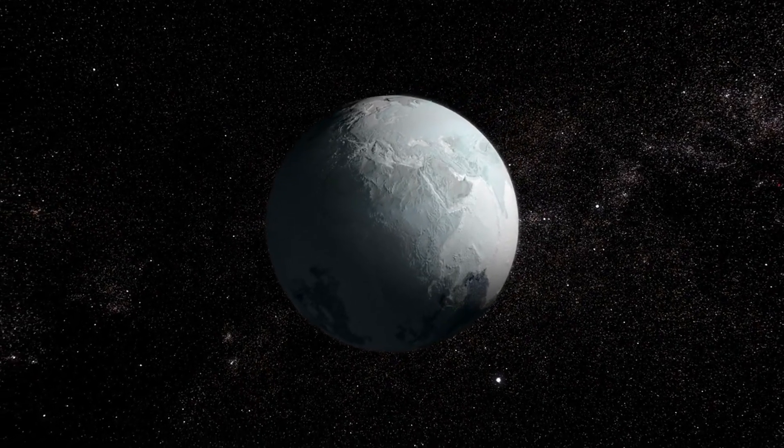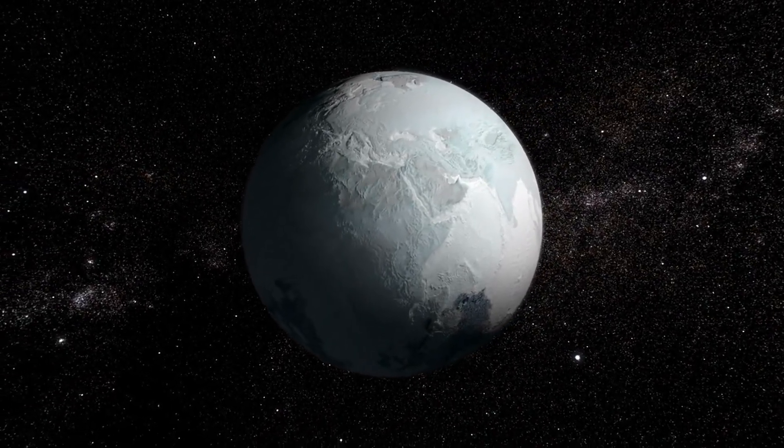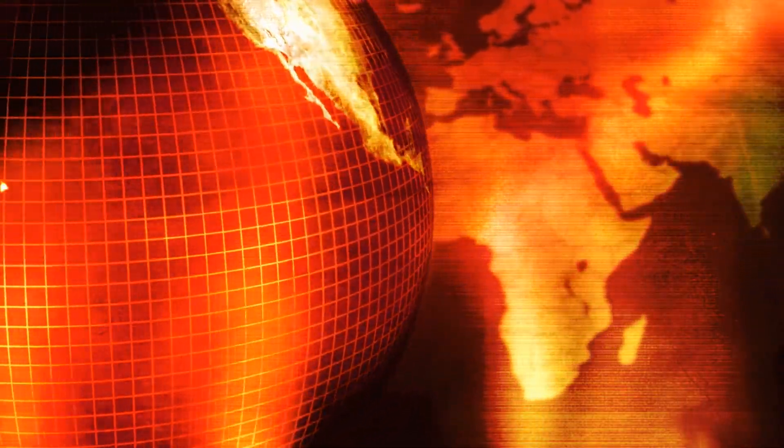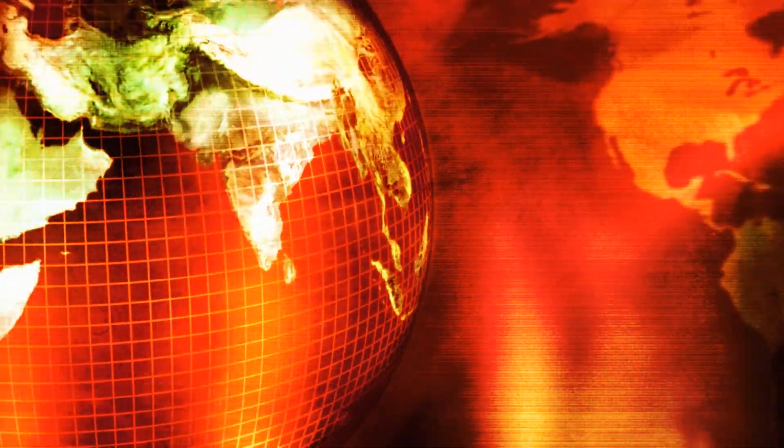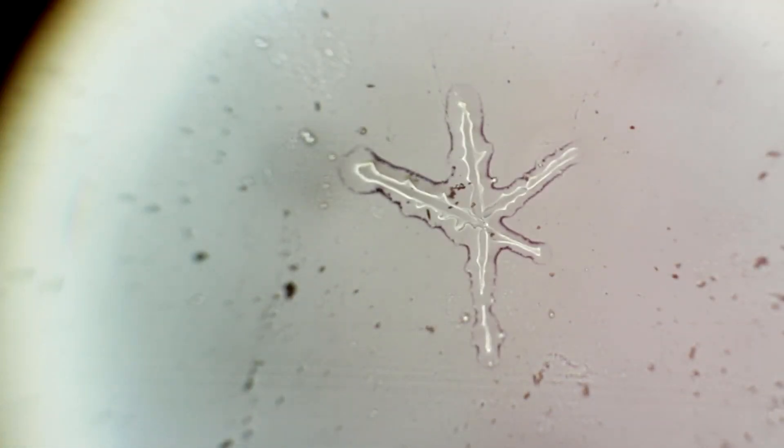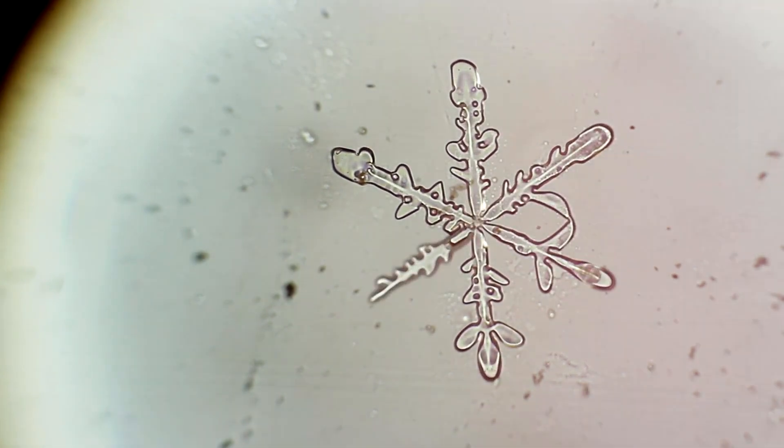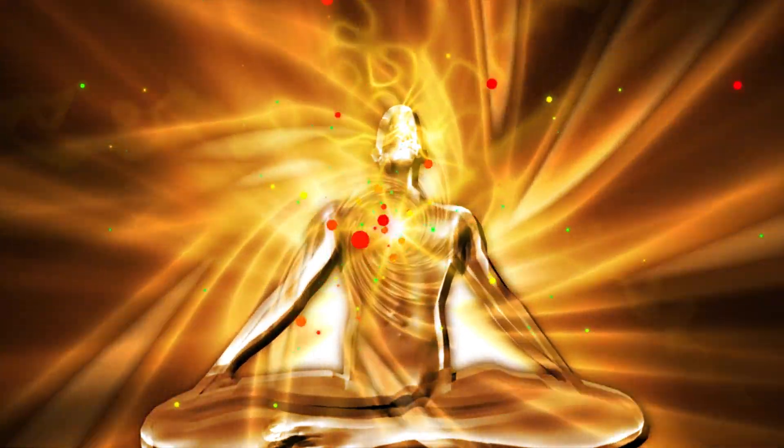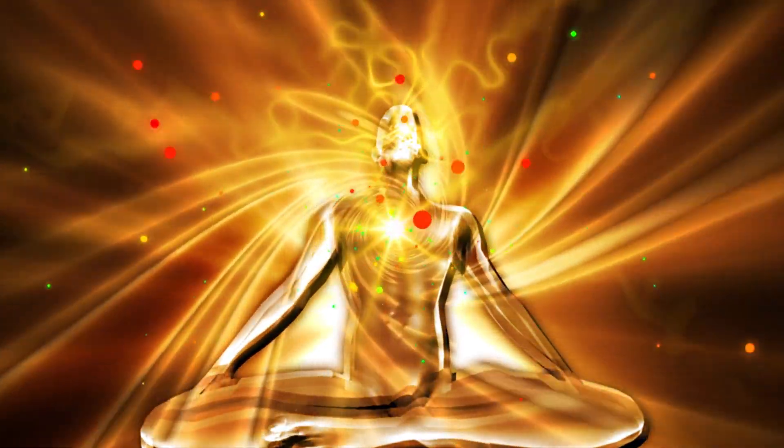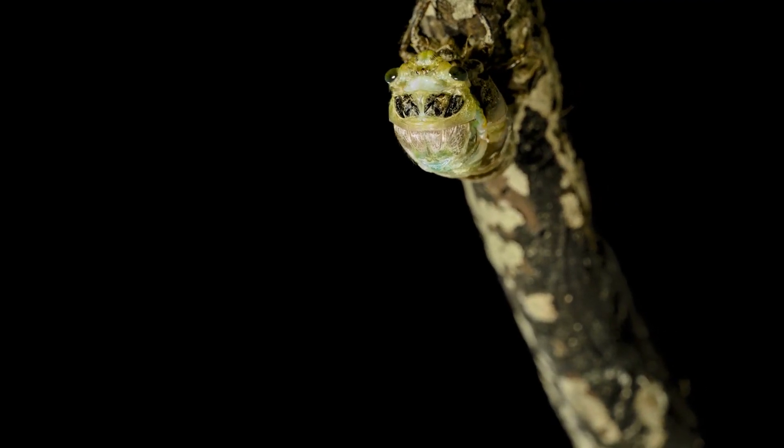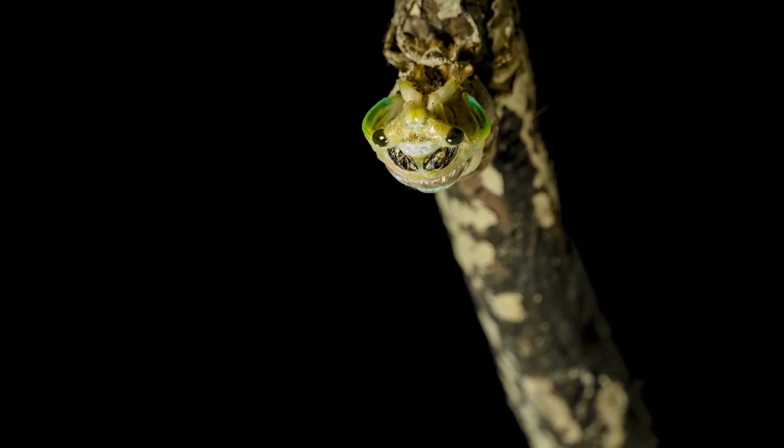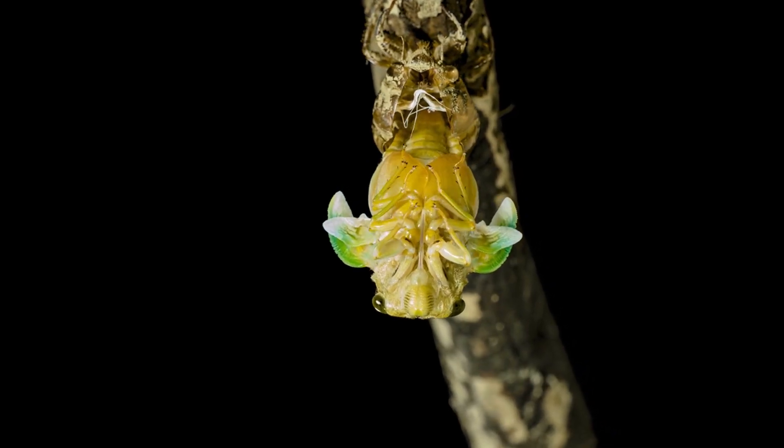The Cryogenian period represents one of the most extreme and transformative chapters in Earth's history. Characterized by global glaciations, major climatic shifts, and significant evolutionary pressures, it played a pivotal role in shaping the trajectory of life. The snowball Earth hypothesis, though debated, remains a leading explanation for the extensive glaciation events of this time. Despite its challenges, life persisted, adapted, and ultimately flourished in the post-Cryogenian world. The transition into the Ediacaran period marked the emergence of complex, multicellular life, illustrating the resilience and adaptability of biological systems in the face of extreme environmental change.